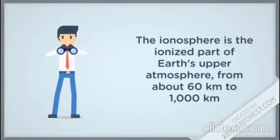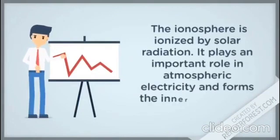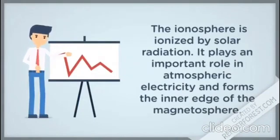The ionosphere is ionized by solar radiation. It plays an important role in atmospheric electricity and forms the inner edge of the magnetosphere.